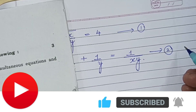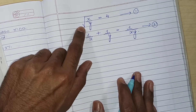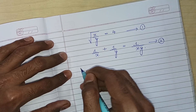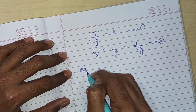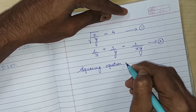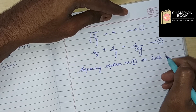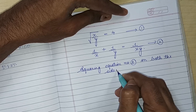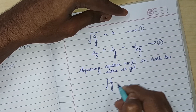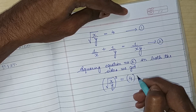First of all, we are supposed to make it an equation. We need to work on equation number 1: root of x upon y is equal to 4. What do we do? We square both sides.